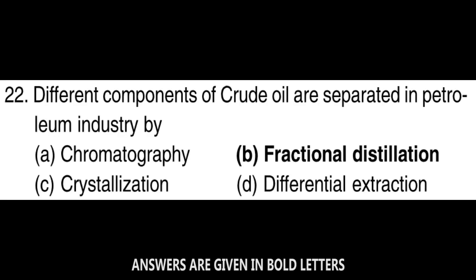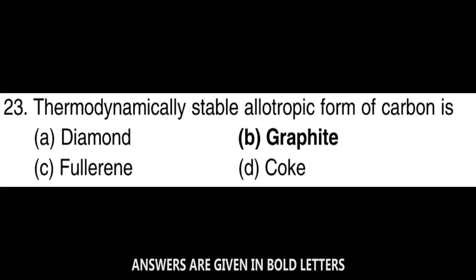Next question: Different components of crude oil are separated in petroleum industry by fractional distillation. Next question: Thermodynamically stable allotropic form of carbon is graphite.